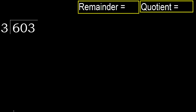603 divided by 3. 6 is not less, therefore start with 6. Multiply by which number is nearest to 6 but not greater. 3 multiplied by 3 is 9 — 9 is greater. Multiply by 2: 3 multiplied by 2 is 6, which is not greater. Okay.